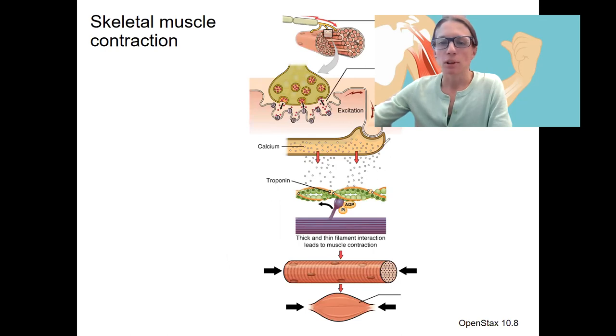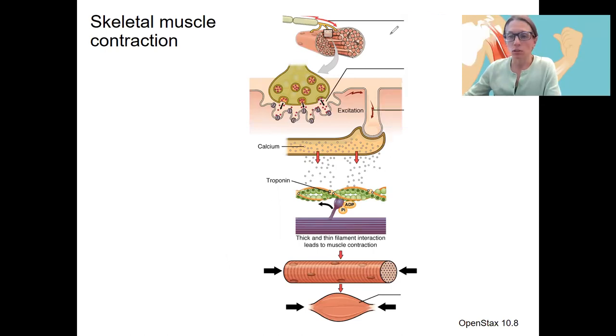So quick reminder, muscle contraction is going to involve an action potential in the motor neuron. The motor neuron is going to release acetylcholine, and acetylcholine ACh is going to bind to receptors on the muscle cell. This is going to cause the initiation of an action potential in the muscle cell. This causes calcium release from the SER, the sarcoplasmic reticulum.